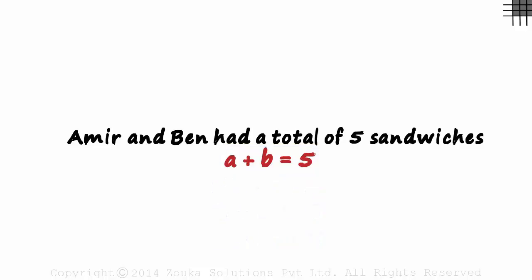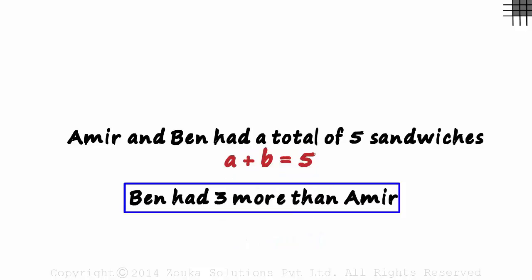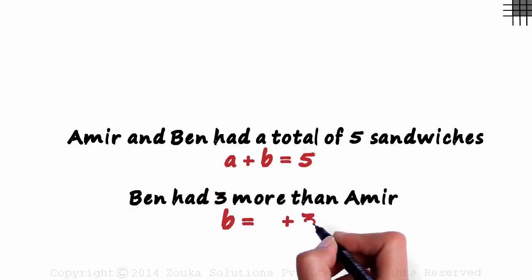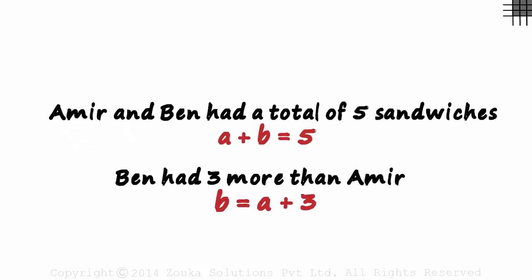Now let's say I tell you that Ben had three more sandwiches than Aamir. In the variable form, this can be written as B equals A plus 3.